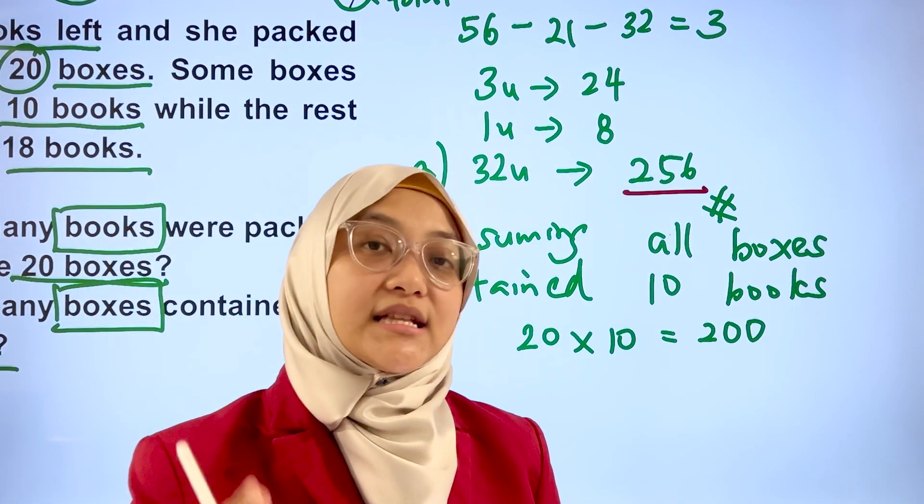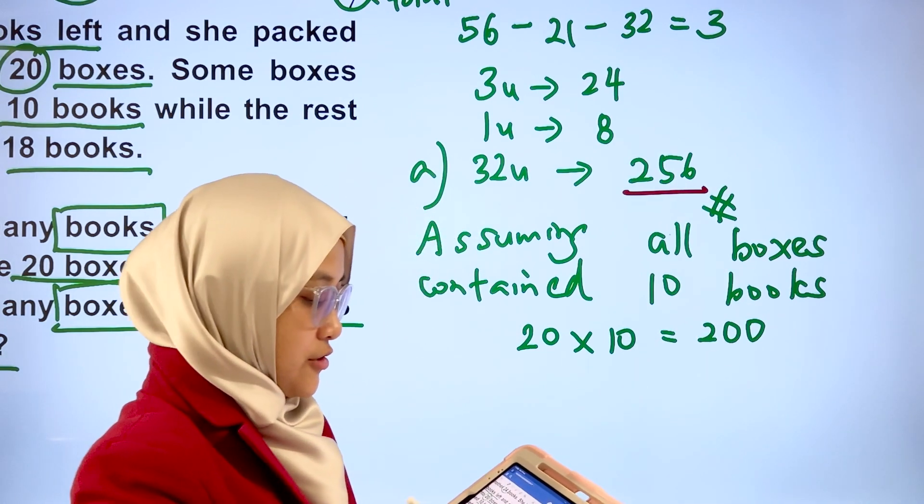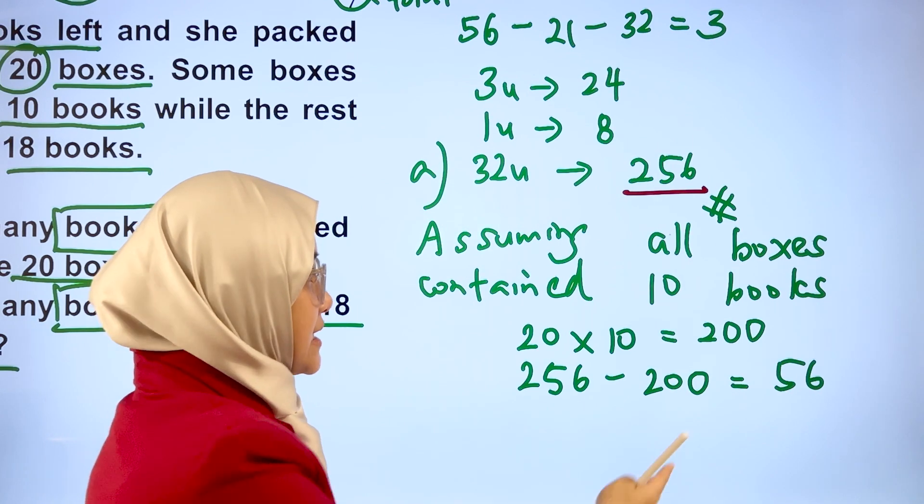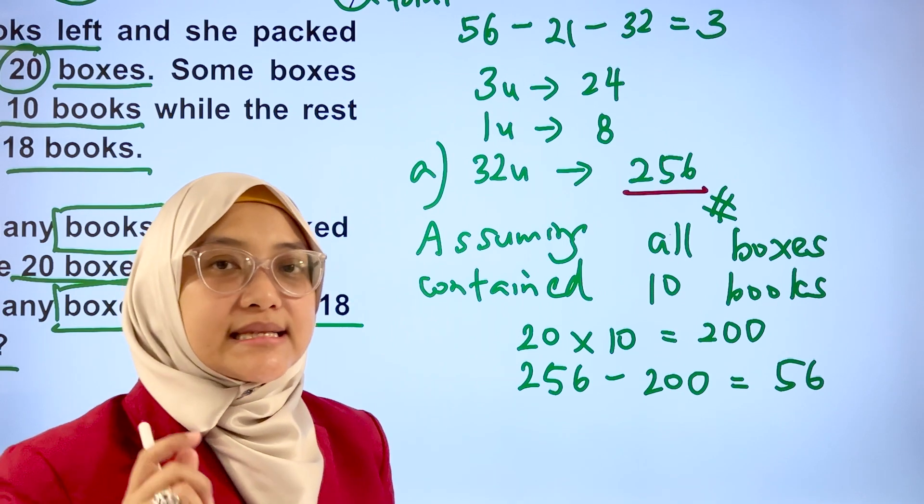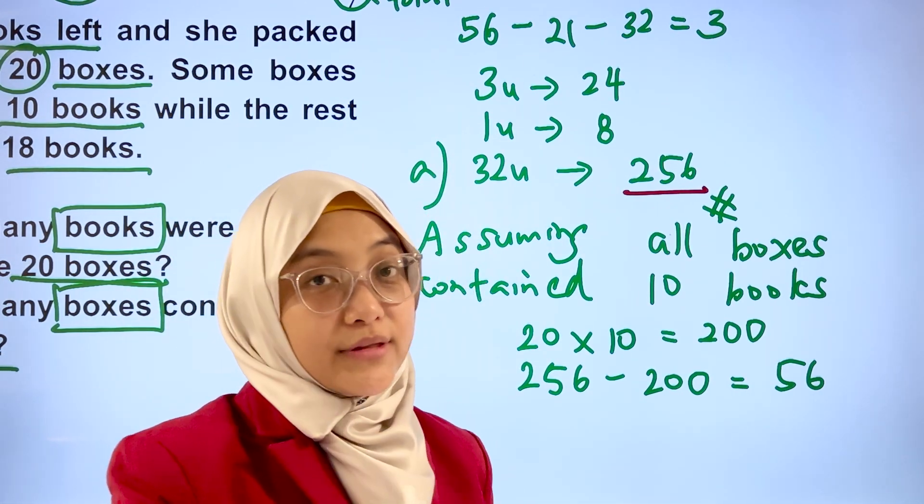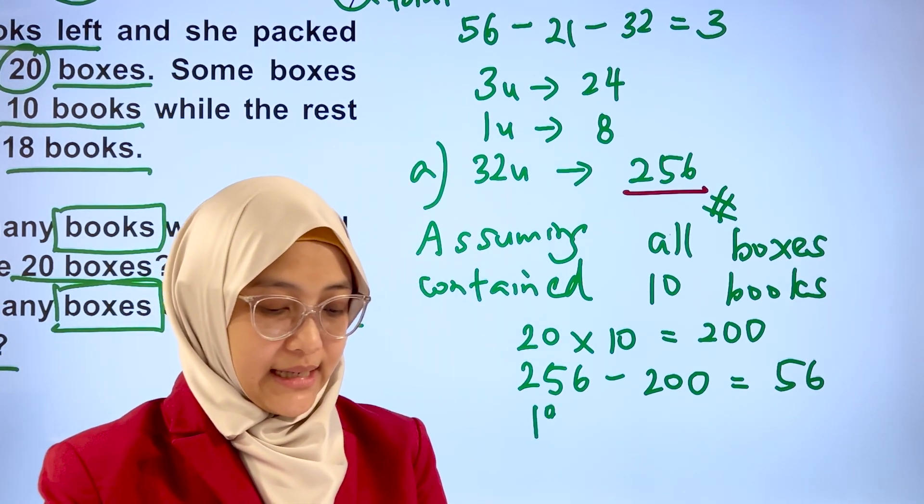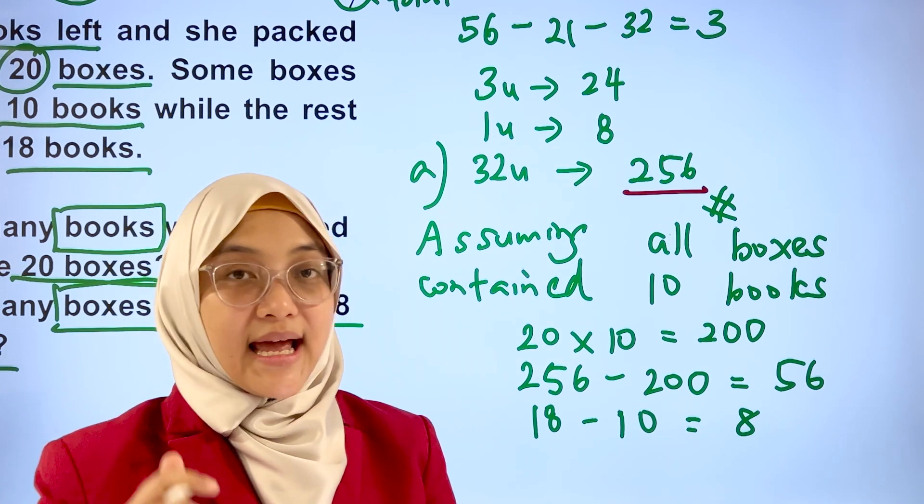Now, let's find the difference between what we need and what we have. 256 minus 200, that gives us 56 books. Next, let's find out what is the difference between the number of books that contain 18 books as well as 10 books. 18, subtract by 10, that gives us 8.